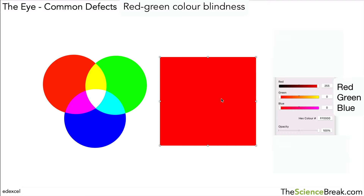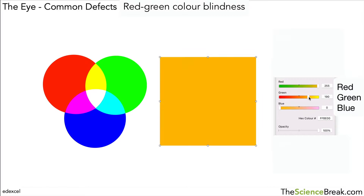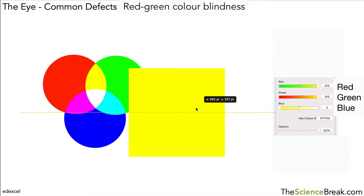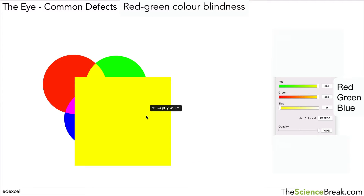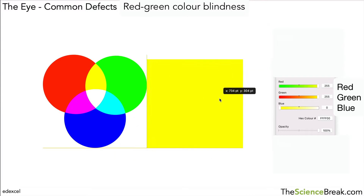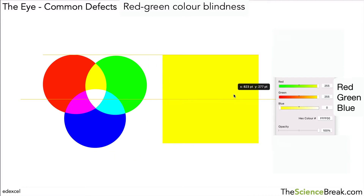Now we can actually add some green light to that. If we mix the red and the green to the full extent we see the colour in between the red and the green, and that's the yellow colour there. That's what happens when we mix the red and the green — so that's another colour that we can see.